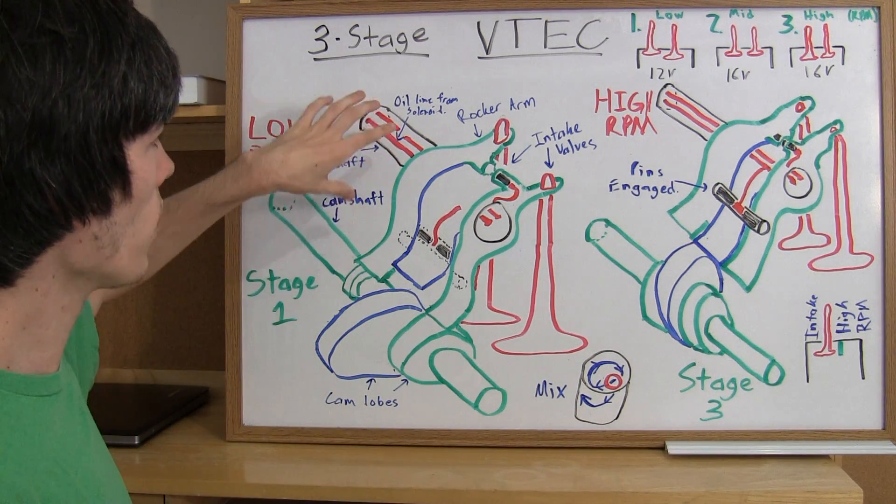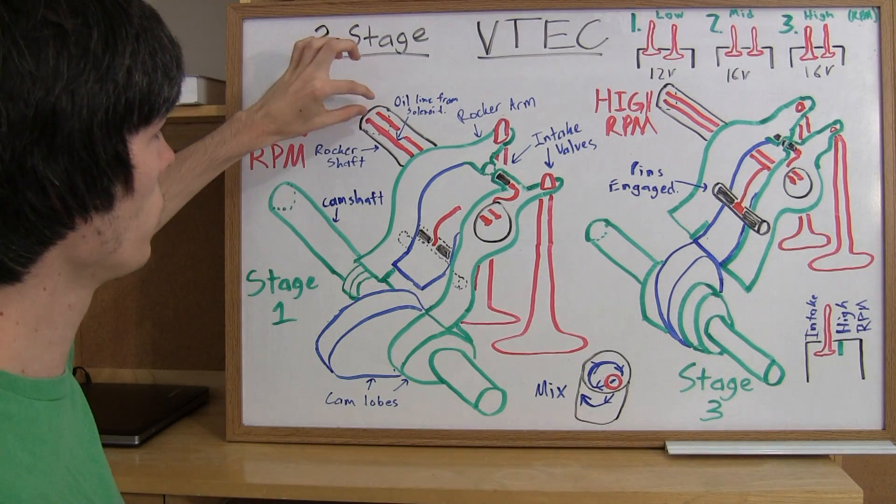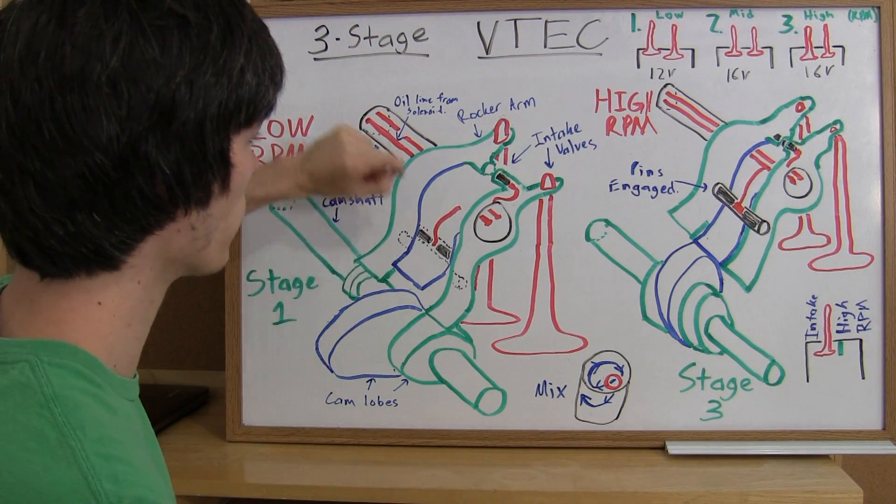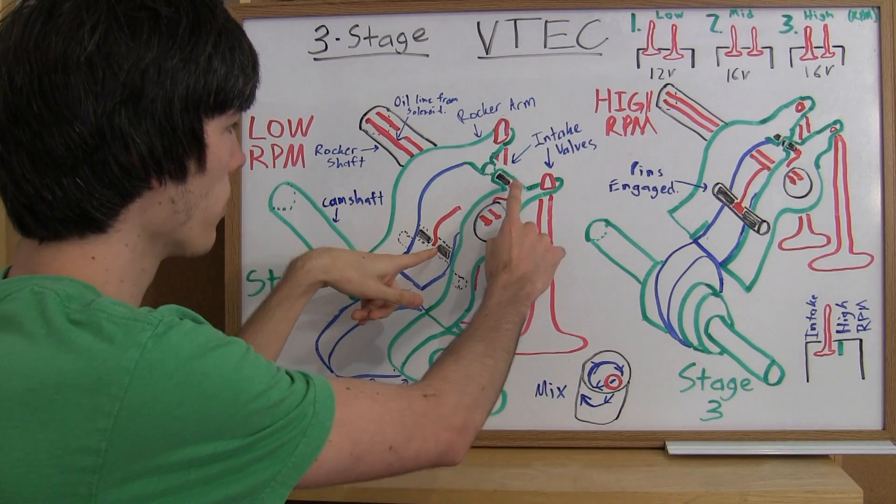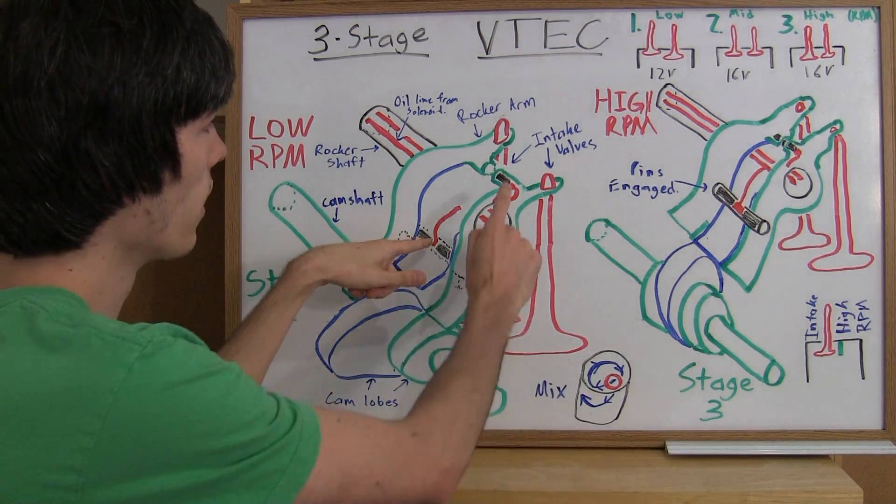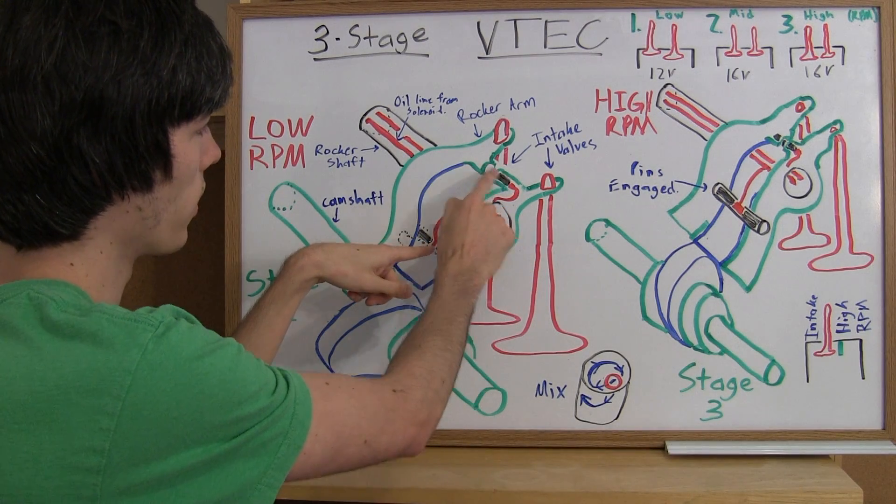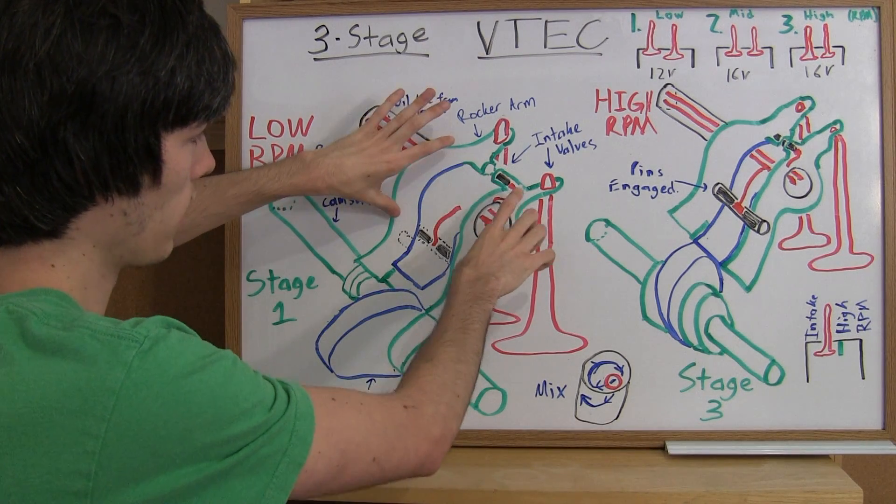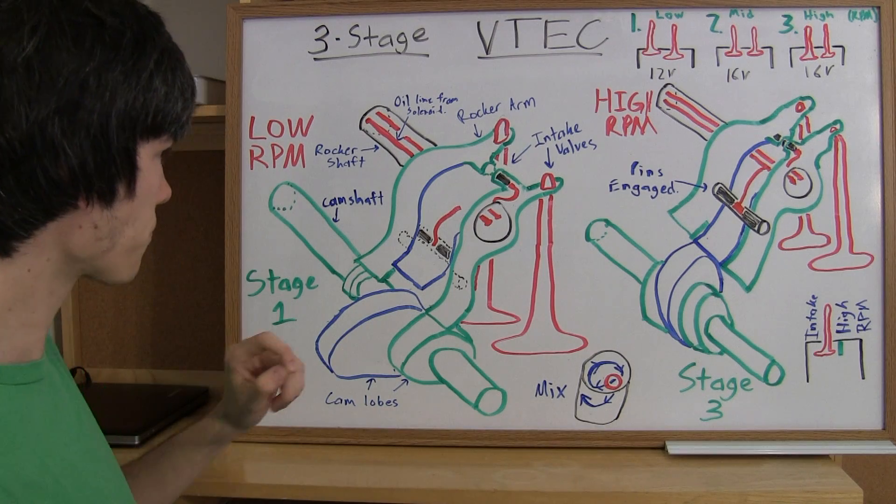So one thing it adds is you're going to have two oil lines with two separate solenoids controlling two different sets of pins. Where in regular VTEC you just have this one set of pins here, three-stage has added another at the top which can connect the outer two rocker arms.